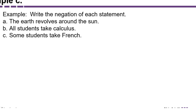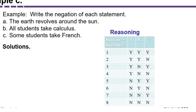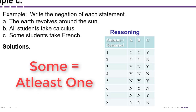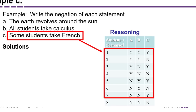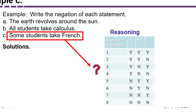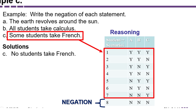Now for 'some students take French.' The word 'some' means at least one. Scenarios one through seven all include at least one student taking French, making the statement true. The only scenario making it false is scenario eight, where no student takes French. So the negation of 'some students take French' is 'no students take French.'